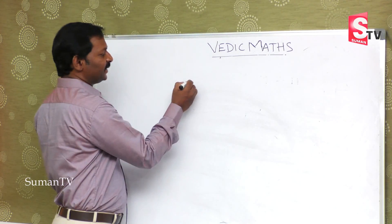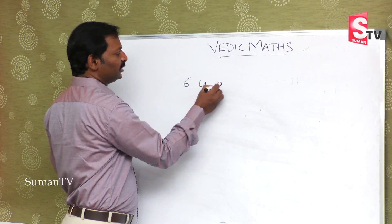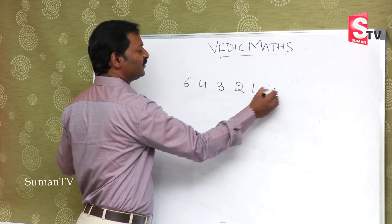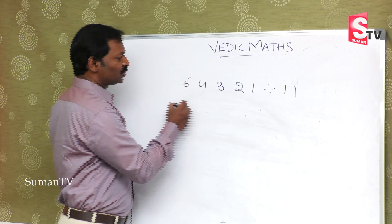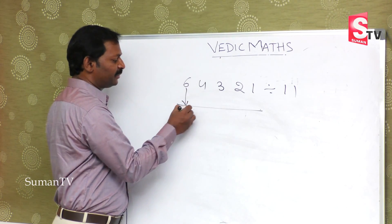Suppose if I take 64321 divided by 11. So what is our procedure? First number will bring down.